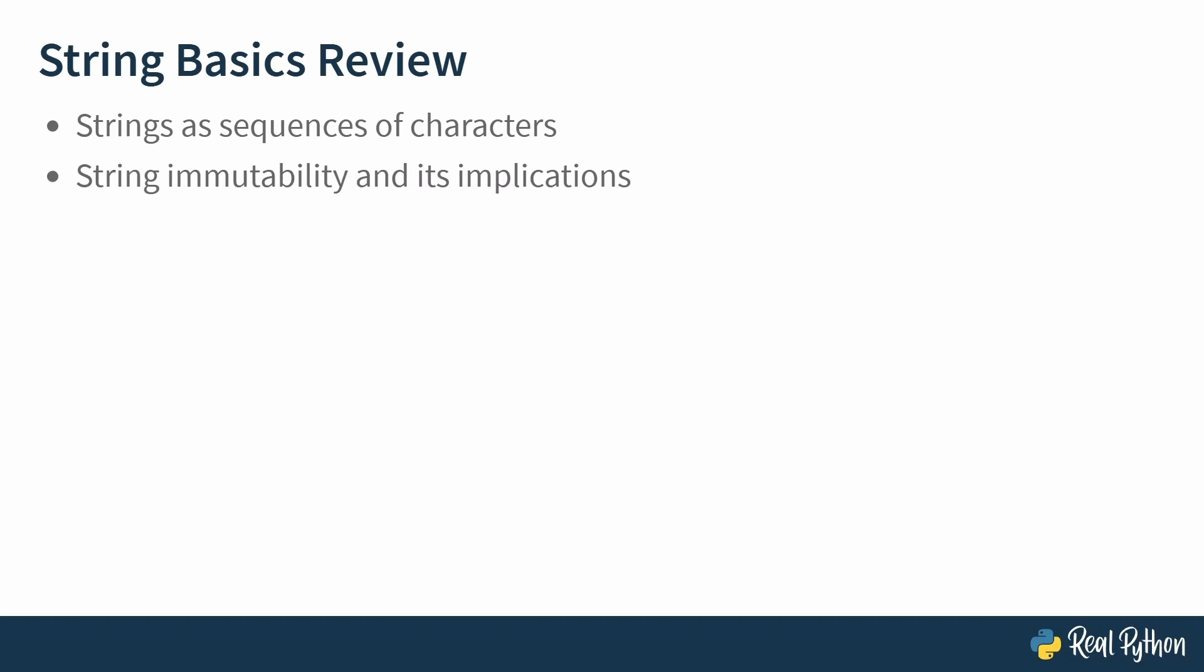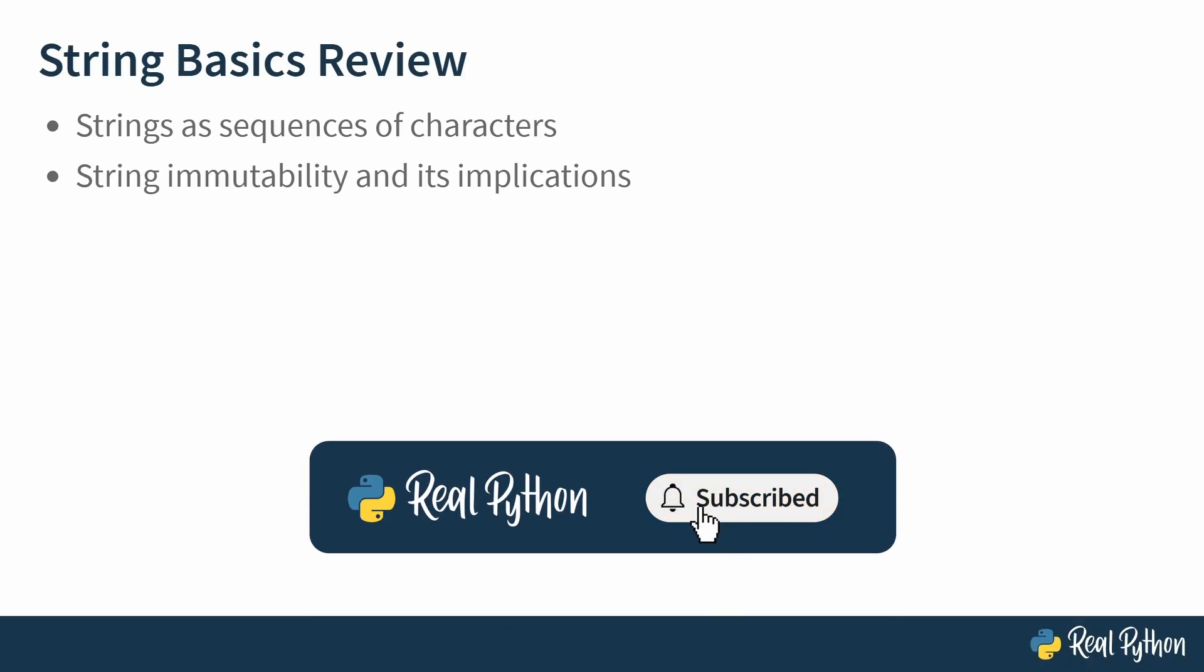Second, and this is crucial, strings are immutable. Immutable means unchangeable. Once you create a string object in Python, like my_string equals hello, you cannot modify that specific object in memory. If you perform an operation that seems to change it, like converting it to uppercase, Python doesn't alter the original hello. Instead, it creates and returns a brand new string object with uppercase HELLO. The same applies to splitting. When you call my_string.split(), the original string remains untouched. What you get back is a new list object containing the substrings. This immutability has implications for memory and how you structure your code when doing lots of string manipulations.